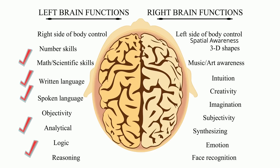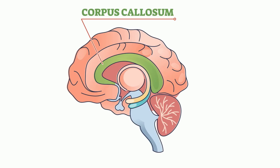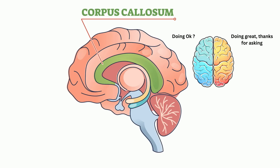The right hemisphere, in general, controls visual information as well as spatial awareness, emotions, social behavior, creativity, and imagination. The two hemispheres of the brain are connected by the corpus callosum, a large bundle of nerve fibers. The corpus callosum allows the two hemispheres to communicate with each other and to integrate information.